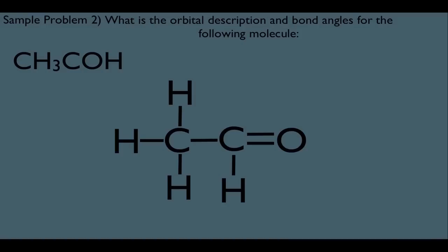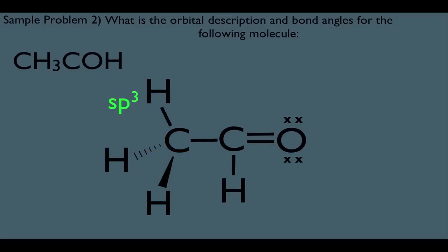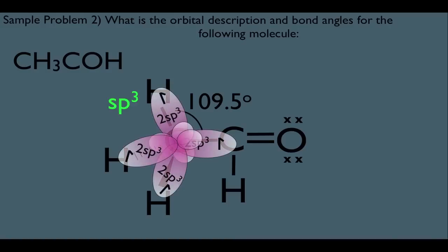Speaking of Lewis dot structures, this oxygen would therefore have two lone pairs of electrons. Now let's look at the orbital description. Looking at the carbon on the left, if we determine the steric value we get a total count of four, which means this carbon is SP3 hybridized. That means its bonding looks tetrahedral with 109.5 degree bond angles, causing one hydrogen to come out of plane and another to go behind. Its orbital picture shows four SP3 hybridized orbitals creating all four sigma bonds around this carbon.